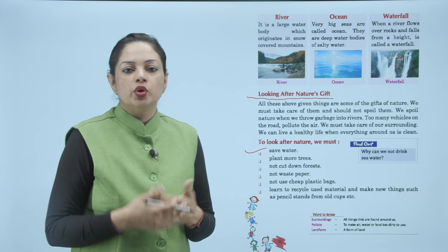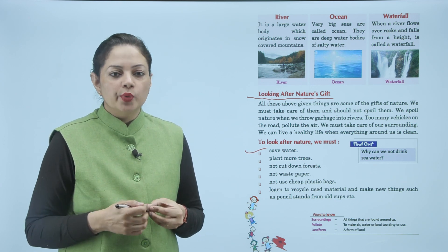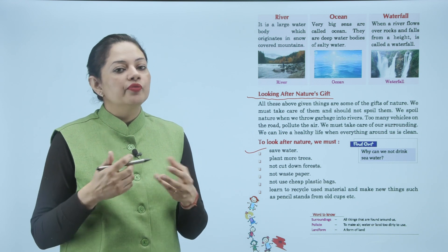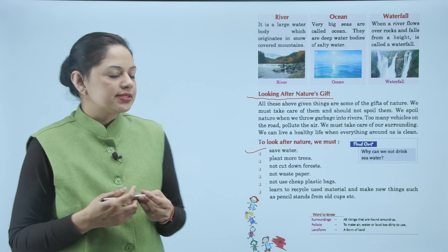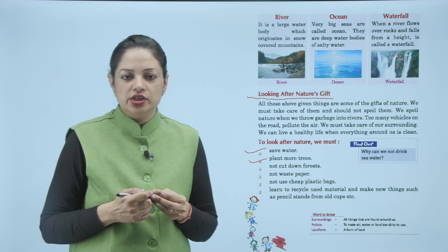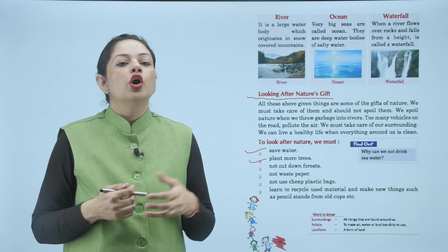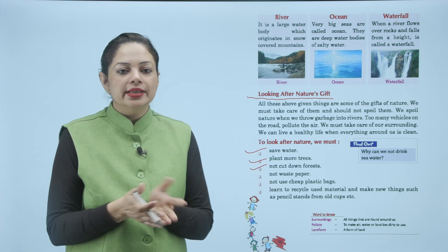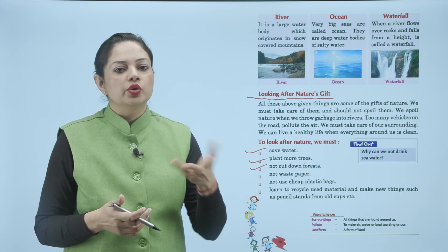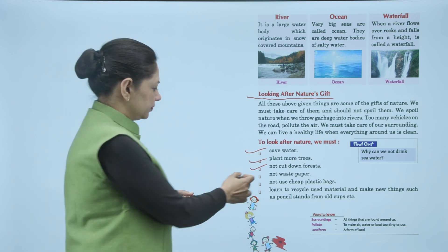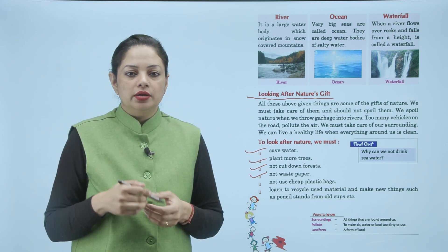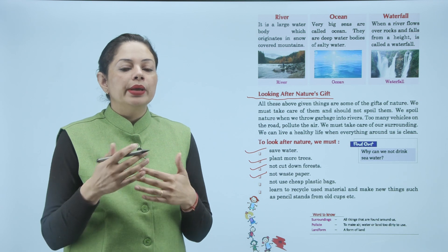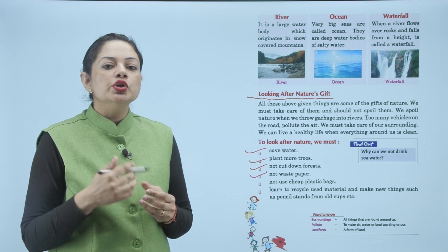To look after nature: first, save water — पानी बचाना चाहिए। Water हमारे लिए बहुत important है, तो brush करते समय नल खुली नहीं रखनी चाहिए, bucket से नहाना चाहिए। Next: plant more trees — ज़्यादा से ज़्यादा trees grow करने चाहिए। Not cut down forests — जितने भी forest हैं, trees को cut down नहीं करना चाहिए।